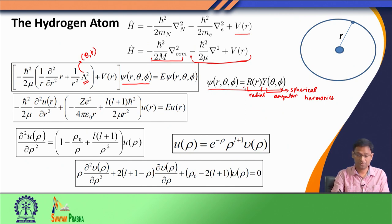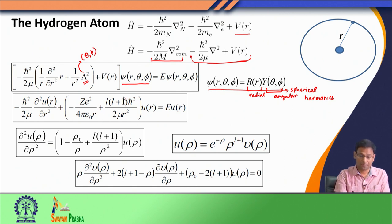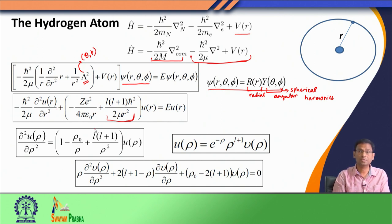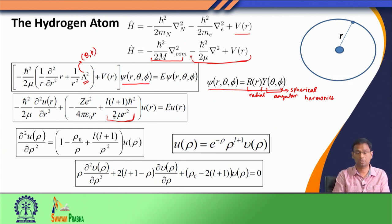Once we use this variable separation, the Schrödinger equation gets simplified. When the lambda squared operator acts on the angular function Y, we get a second term in the effective potential energy. We have the kinetic energy and the effective potential energy, where the first term is the Coulombic interaction and the second term is the centrifugal force that arises when the electron goes around the nucleus. The orbital angular momentum of the electron generates the centrifugal force that keeps the electron from falling onto the nucleus.